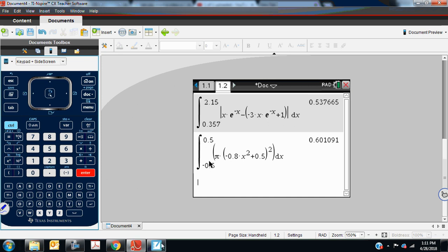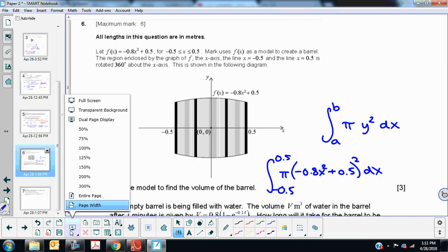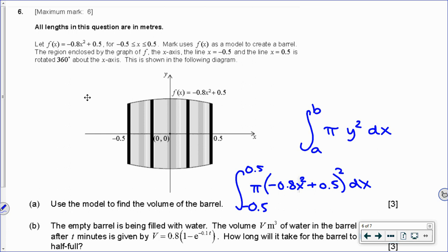And 0.601 is the volume of this figure between negative 0.5 and positive 0.5, and that's as easy as that for the volume question. So 0.601.